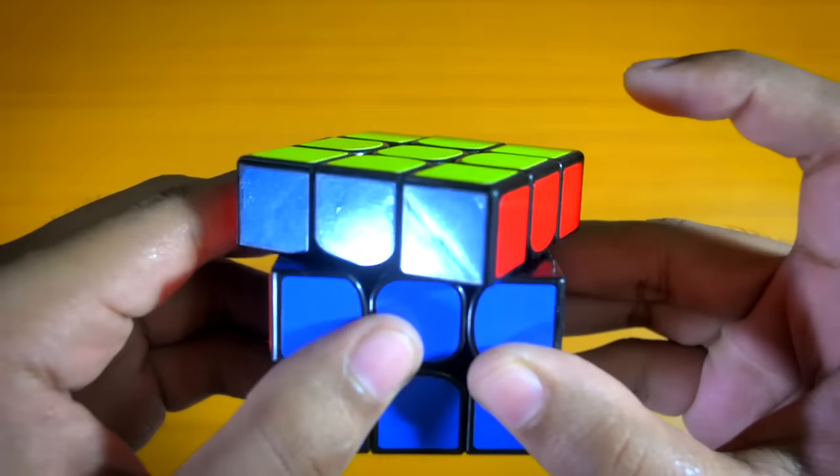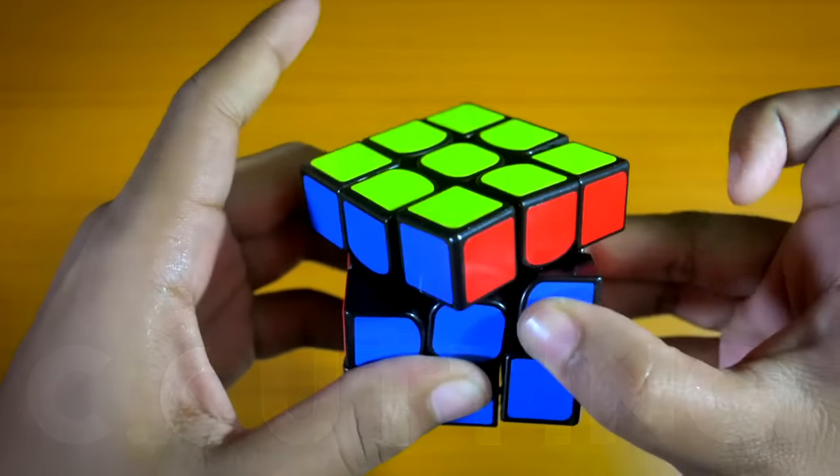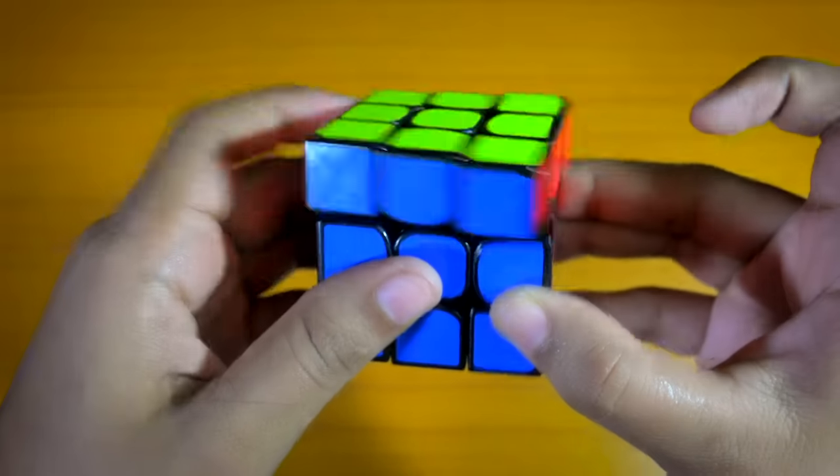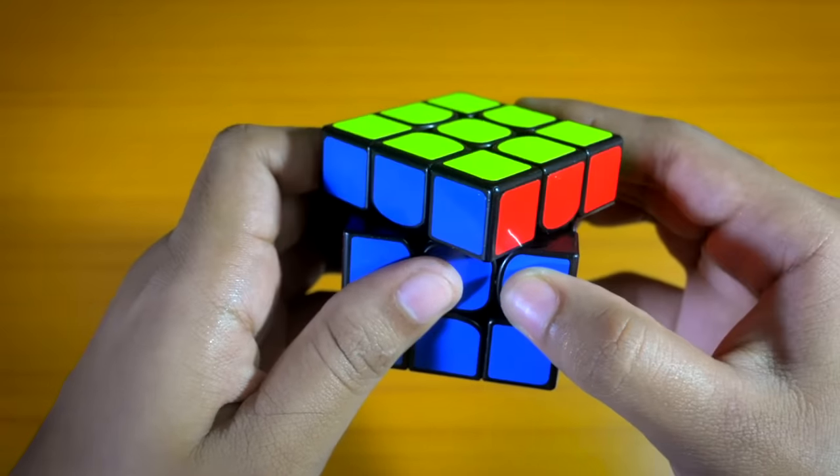The corner cutting of most of the modern speedcubes is pretty standard now. The Valk 3 can cut over 45 degrees for normal corner cutting and line to line for reverse corner cutting. Reverse corner cutting may catch sometimes if you go over the line to line mark.